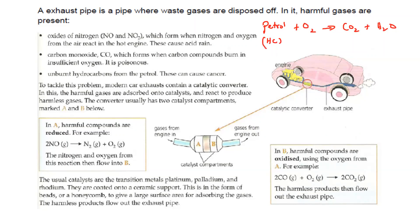That carbon dioxide and water vapor are released from the exhaust pipe. But what is the harmful effect? When a car engine is burning petrol, sometimes the combustion is not complete. You may have seen some cars giving off black smoke.